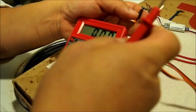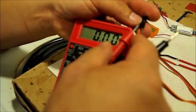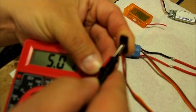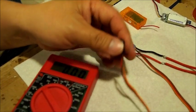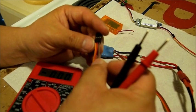I'm pretty sure the middle is positive and then the one on the right hand side is negative, but I'll go ahead and test it. Alright, so there you go, 5.01 volts coming from the ESC. So I'm sure that the red one here is positive and this brown one is negative.